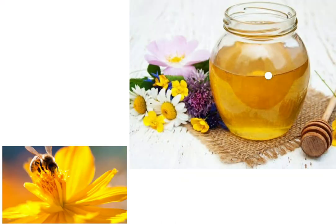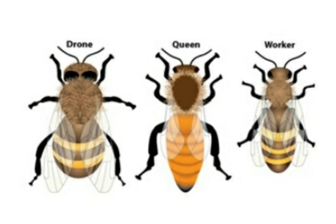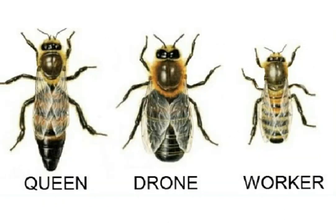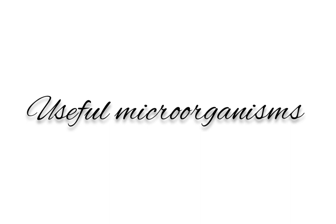Honey is a thick, sweet fluid made by bees from the nectar of flowers. It consists of water, sugar, minerals, enzymes, and vitamins. The colony of honeybees comprises the queen, males, and workers. The queen lays eggs; workers are females but cannot lay eggs — they produce honey and wax. The males are called drones. Beeswax is used to make candles, ointments, polishes, and cosmetics.